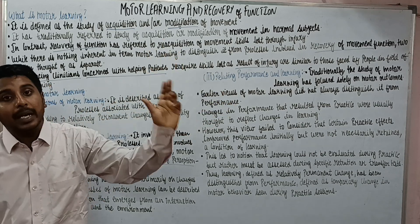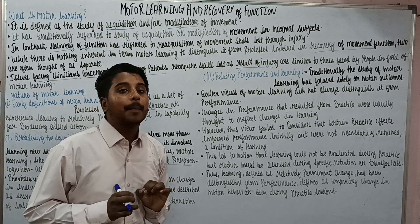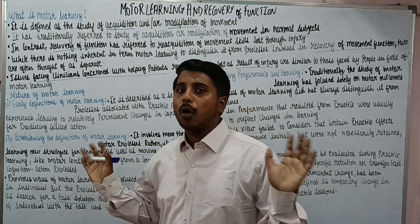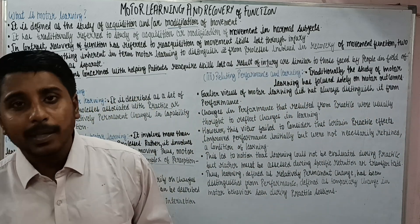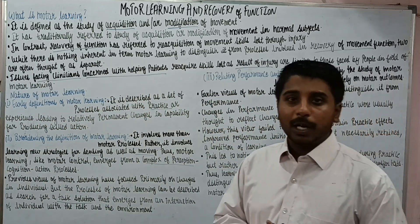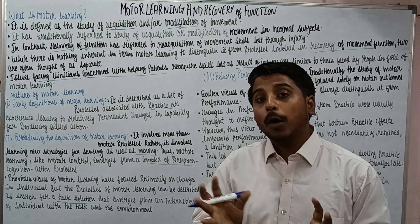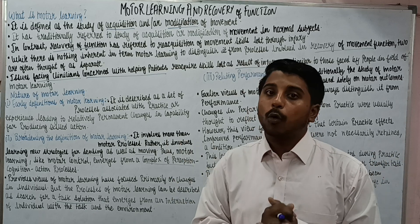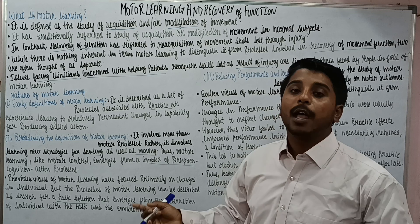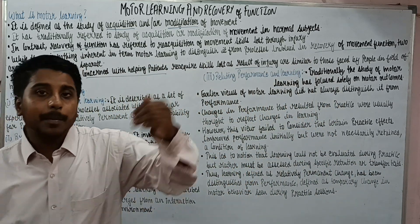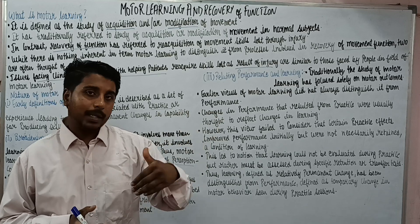The third point relates performance and learning. For example, consider a person suffering from stroke, where weight bearing on the right lower limb is reduced. After the treatment is completed, we ask the person to walk, and they are walking very well — giving equal weight bearing on both limbs. So we can say our treatment is good and has produced the desired effect.